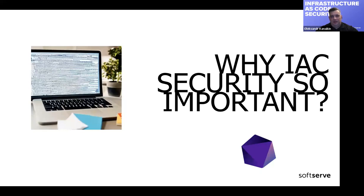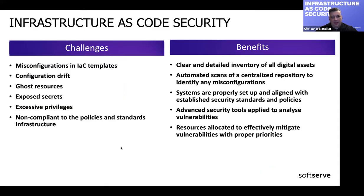It is the only way to get consistent, scalable, and immutable security. When clouds are orchestrated by misconfigured code, they will continue to be orchestrated and configured incorrectly in production each time. This is why IAC security is an important part of IAC and DevOps practices — it enables organizations to shift their security from detection to prevention.